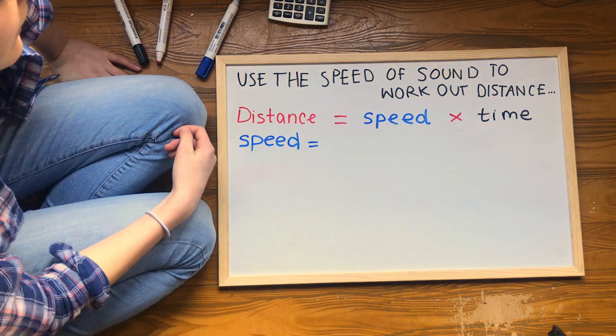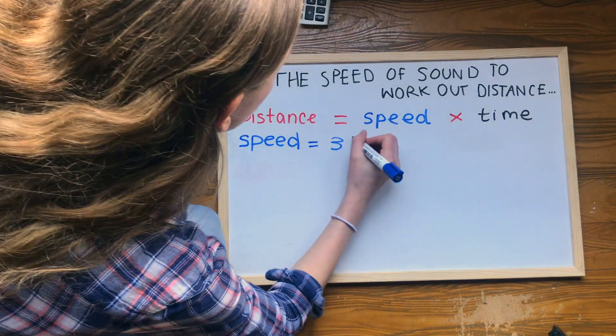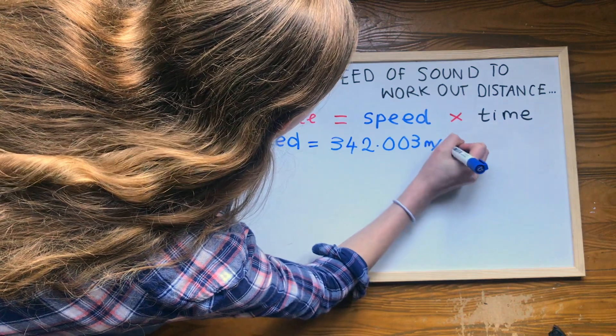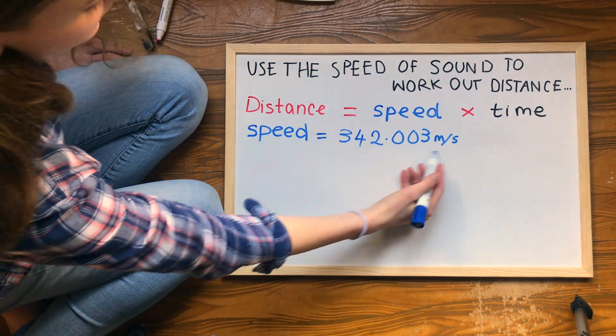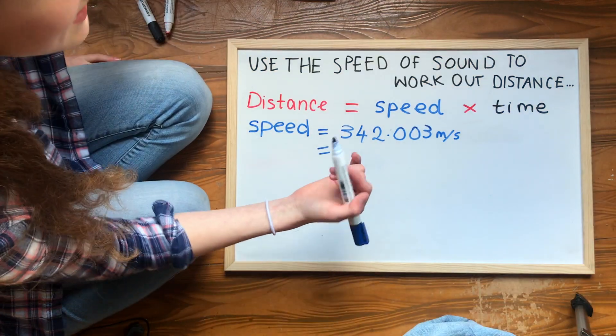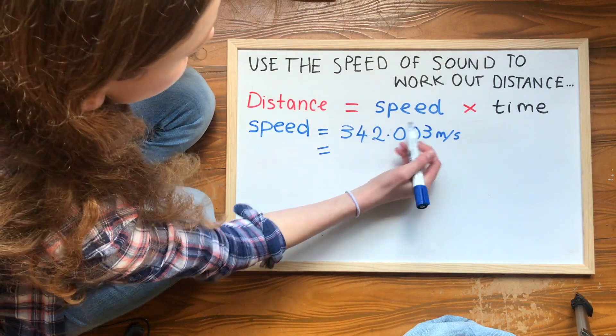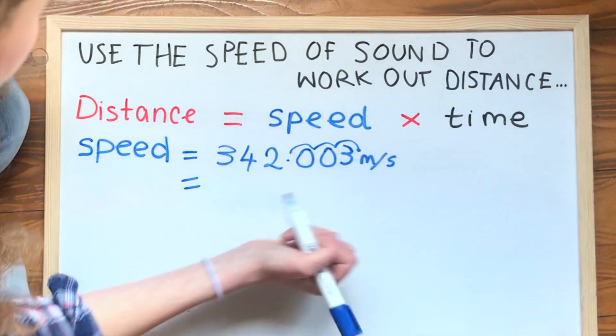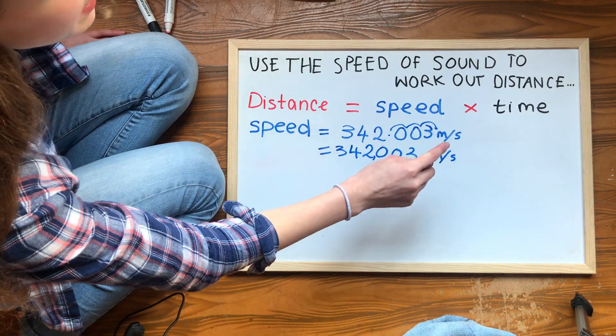Let's start with what we know. The speed of sound, which we know in this room, is equal to 342.003 metres per second, because we've just worked that out. But I need that in millimetres per microsecond. So we need to convert this. So let's start with converting it to millimetres per second. Well, there's a thousand millimetres in a metre. So we'll start by timesing this number by a thousand. So we'll just move the decimal point. One, two, three, here.